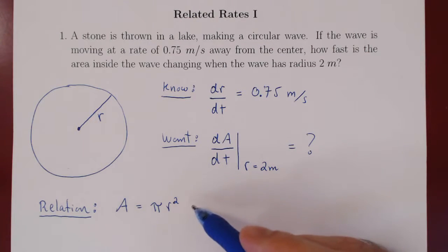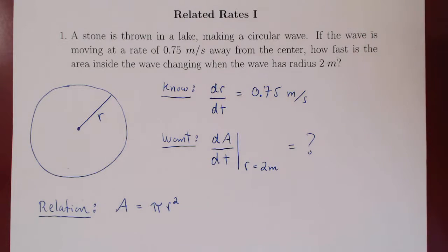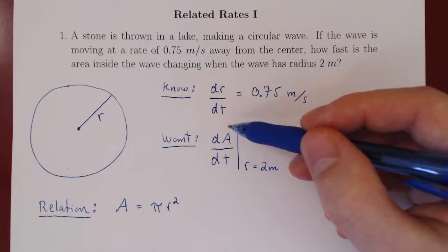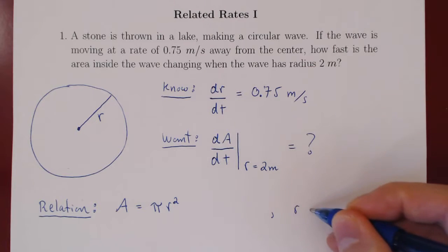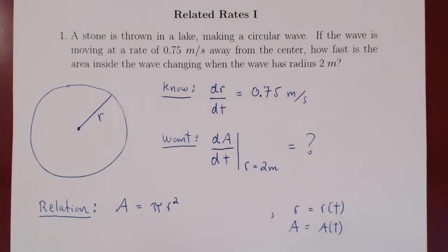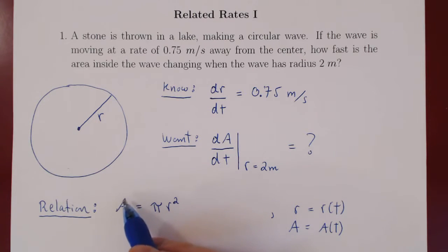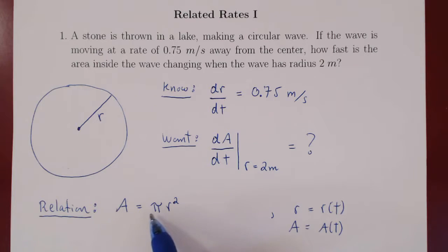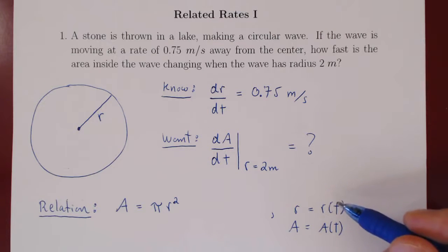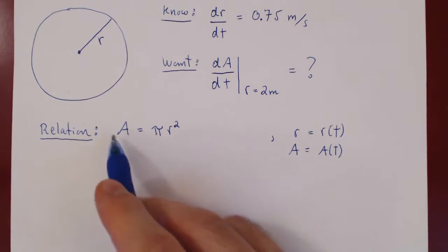We are not going to use implicit differentiation directly — instead, note that as time changes, r changes, and as time changes, A changes. So r is a function of time, and A is also a function of time. Both sides of A = πr² are equal as functions of time t. Therefore they have the same derivative with respect to t, the independent variable. So we differentiate both sides with respect to t.